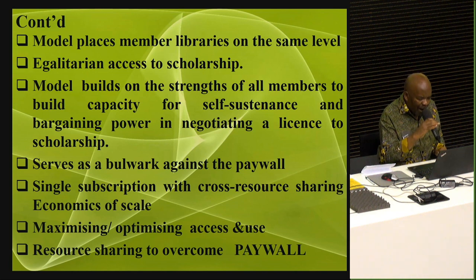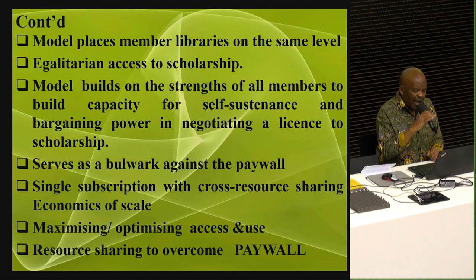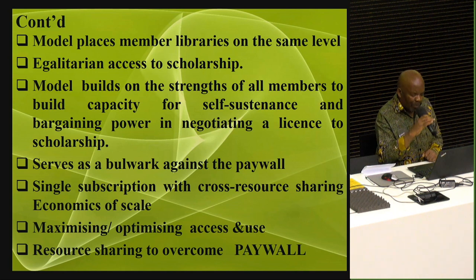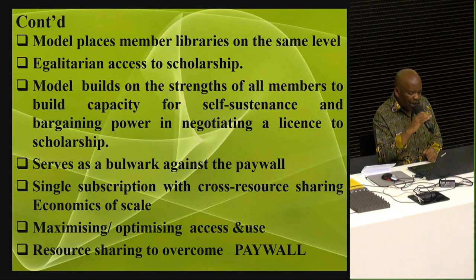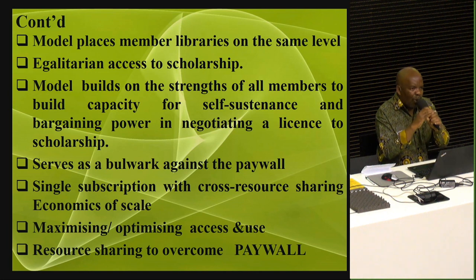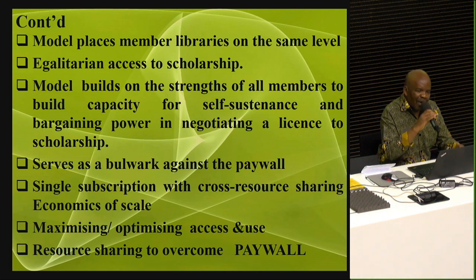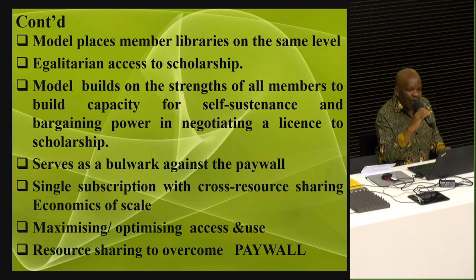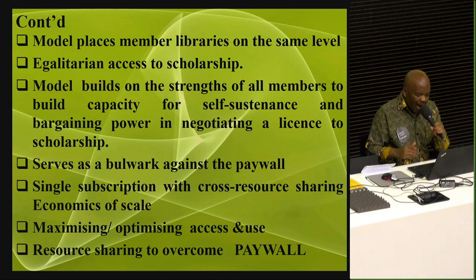The model builds on the strength of all members and builds capacity for self-sustenance and also to increase bargaining power in negotiating licenses for scholarships. It serves as a bulwark against the paywall. Single subscription with cross-resource sharing also helps to arrive at economies of scale, maximizing and optimizing access and use. The model is premised on resource sharing as the way to overcome the paywall. It may not be an automatic process — it's gradual. Brick by brick, we can reach a point where we can say we are able to self-sustain our needs for scholarship, teaching and learning.